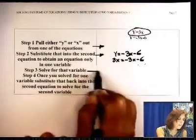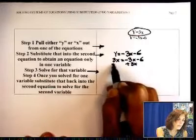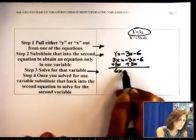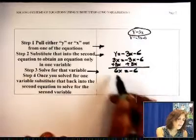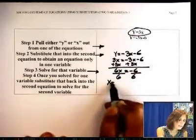And then it says solve for that variable. I'm going to add 3x on both sides. I have 6x equals negative 6. Divide both sides by 6. You end up with x equals negative 1.